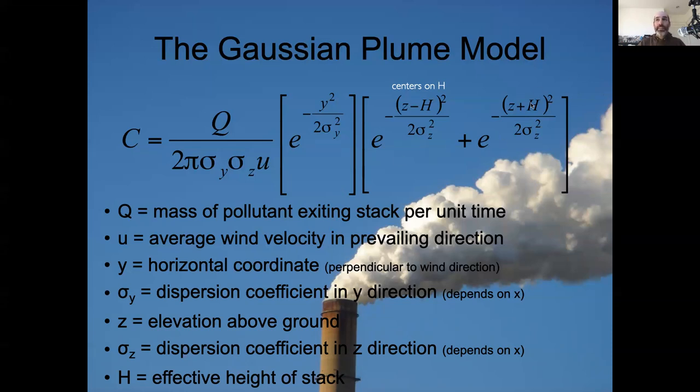This second term, which has a plus h, is what accounts for the amount that is deflected off the ground. So the Gaussian plume model assumes, like the diffusion model, that there is no removal of mass from the system. And so as things diffuse down towards the ground, they're assumed to essentially rebound off the ground in the other direction.